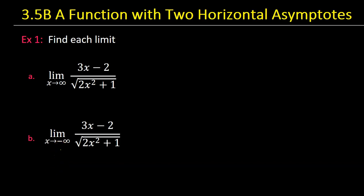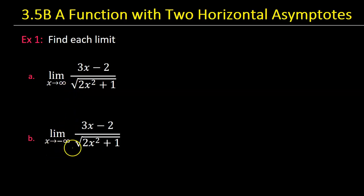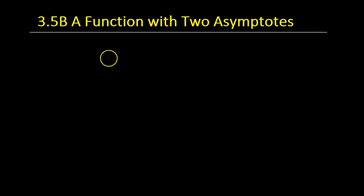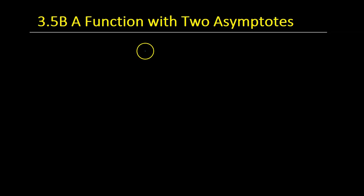This video is about a function with two horizontal asymptotes. That means that the limit as x approaches positive infinity and the limit as x approaches negative infinity will be two different things. This function will involve square roots, so I'm going to need to build up your skills regarding square roots before we begin.